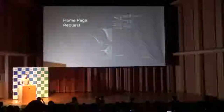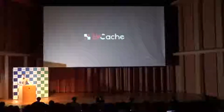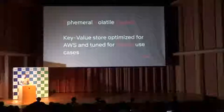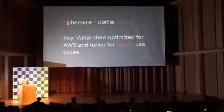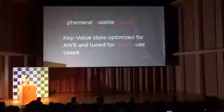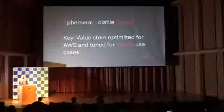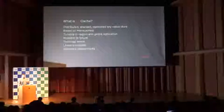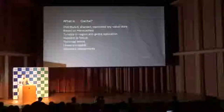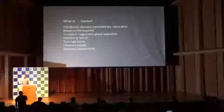The cache that I'm here to talk to you about today is called EVcache. This is the product that we produced inside Netflix. It stands for ephemeral volatile cache. But at this point, the name doesn't really make sense because it's not really ephemeral or volatile. So it's more of a key-value store that runs on AWS, tuned for Netflix-specific use cases. It's a distributed, sharded, and replicated key-value store, based on Memcached, with replication that is tunable both within a single region and between different regions.